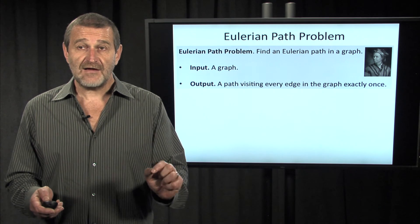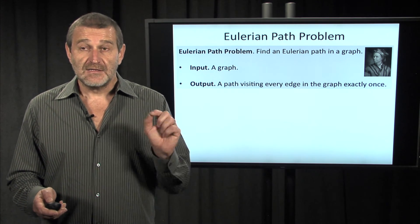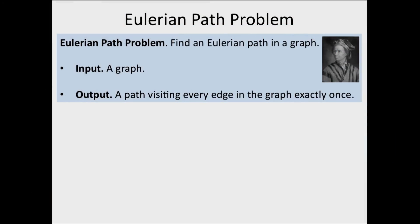And now, we have the Eulerian path problem, that is attributed to Euler, of course. Find an Eulerian path in the graph, which is a path visiting every edge exactly once.